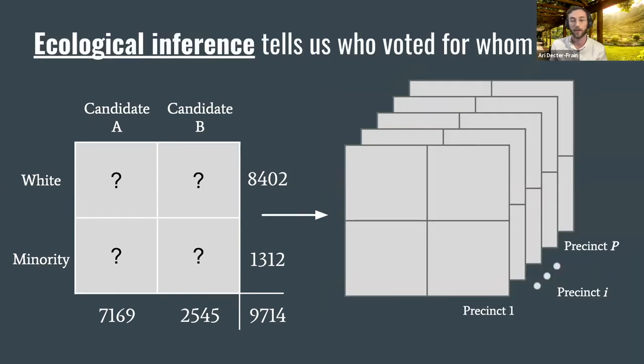Ecological inference is a Bayesian statistical technique that takes advantage of the fact that elections take place across multiple precincts. Maybe in your voting precinct most people are of one race, but in a different precinct the racial makeup is different. EI looks across all precincts for patterns and uses these patterns to estimate the numbers in the table. As a simple example: if precincts with more white voters consistently yield more votes for a certain candidate, we can use EI to conclude that white voters might generally prefer that candidate.